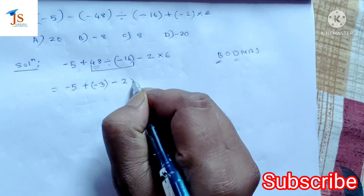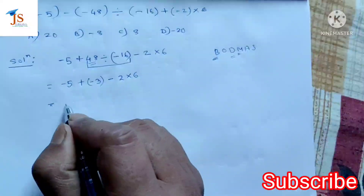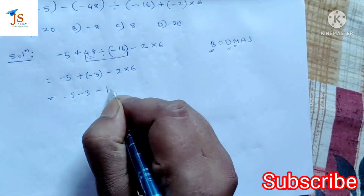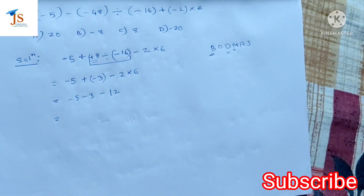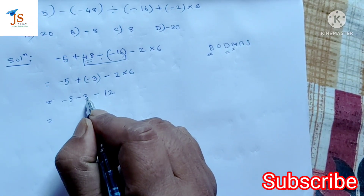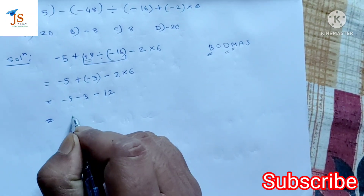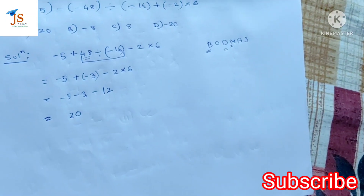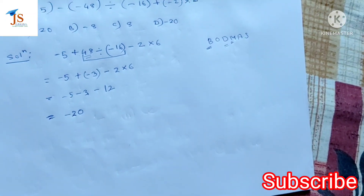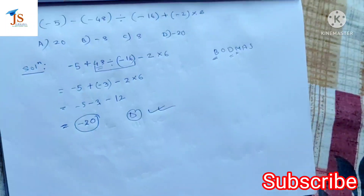Minus 2.6 — this is multiplication, so write minus. This is equal to minus half, and this is 12. Total is 12. This is 20. This is the right answer.